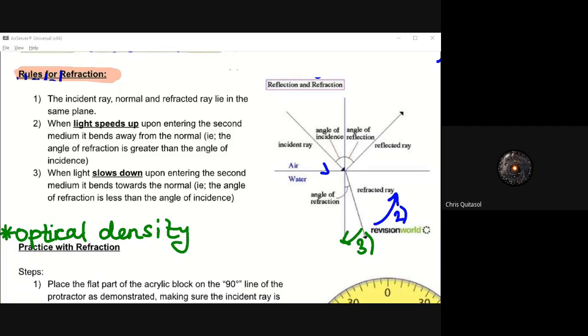The second and third one, though, are going to be the big ones for you. Okay, the second and third one are going to be the big ones for you. When light speeds up upon entering the second medium, it bends away from the normal. It bends away from the normal when light speeds up. So for example, the angle of refraction will always be greater than the angle of incidence. Okay, and I have this little arrow of two pointing out, meaning that the angle of refraction will be greater than the angle of incidence. Just let that sink in for a second. When light speeds up upon entering the second medium, it bends away from the normal. Bends away from the normal. So that's rule two.